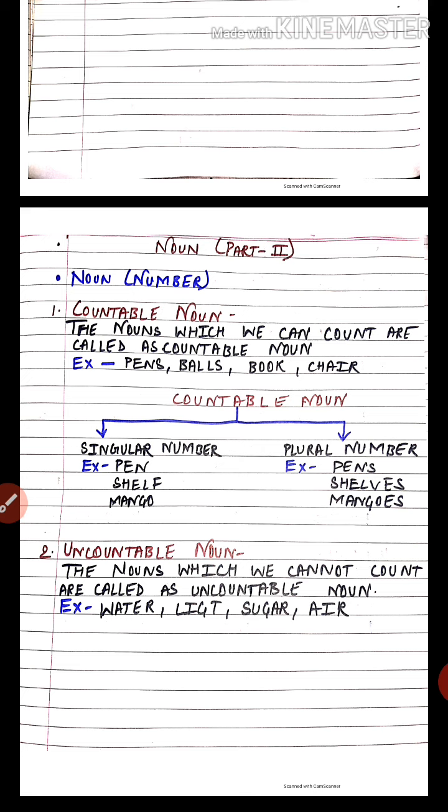For example, if I have one pen I say 'pen,' and if I have more than one I say 'pens.' If there is one shelf I say 'shelf,' and more than one is 'shelves.' If there is one mango I say 'mango,' and more than one is 'mangoes.' So countable nouns can be divided into singular and plural number.